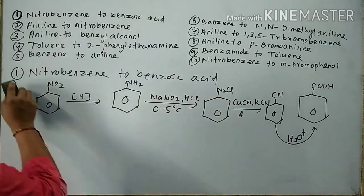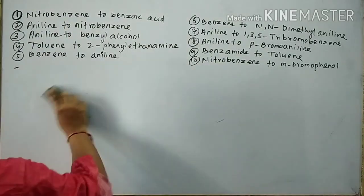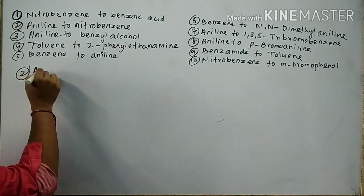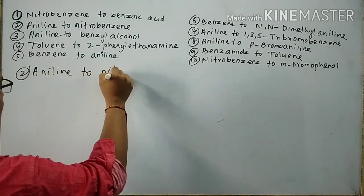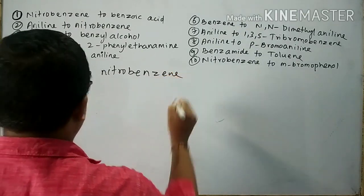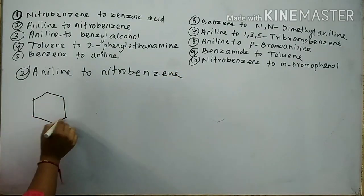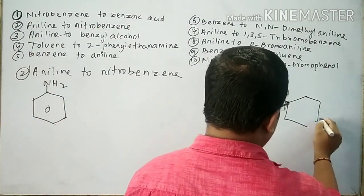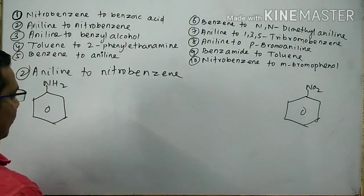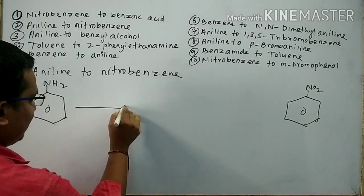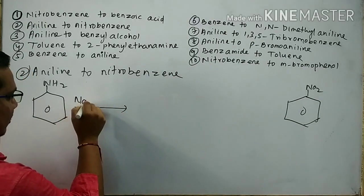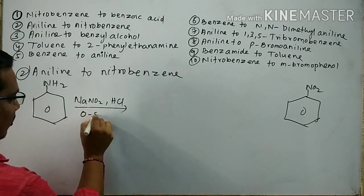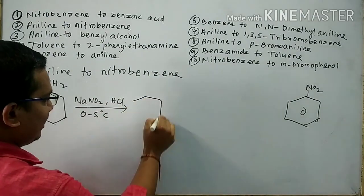Question number 2: Convert aniline to nitrobenzene. The structure of aniline has an NH2 group and nitrobenzene has a NO2 group. First, aniline is converted into BDC where aniline reacts with NaNO2 and HCl at ice-cold temperature, 0 to 5 degrees centigrade.